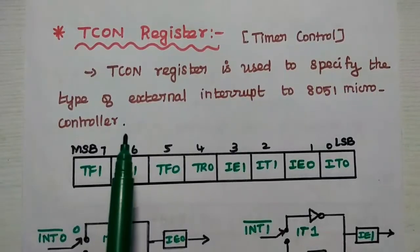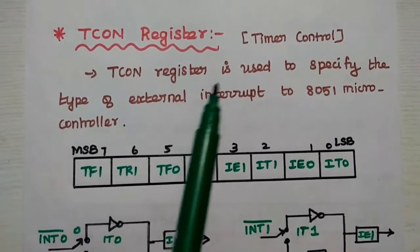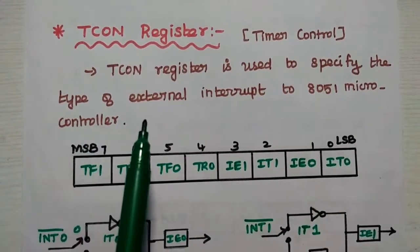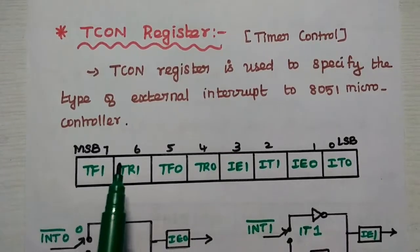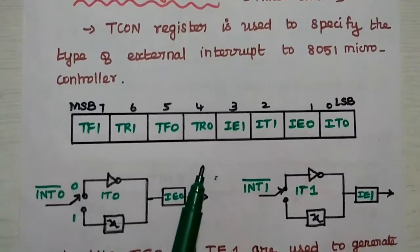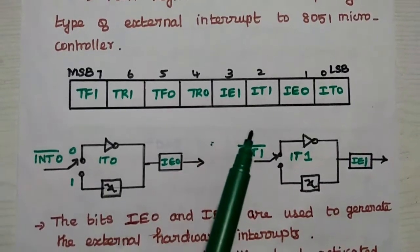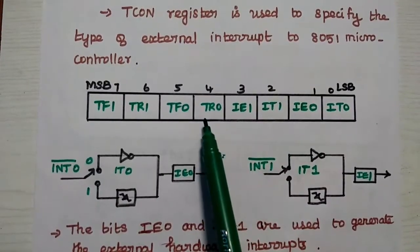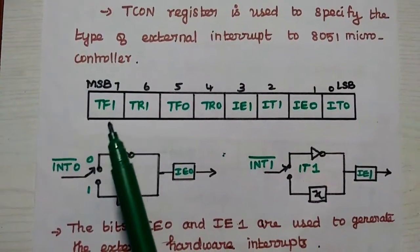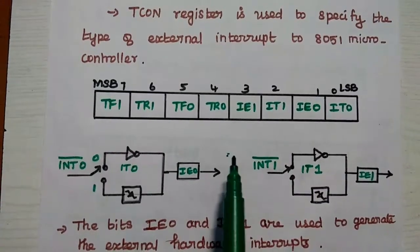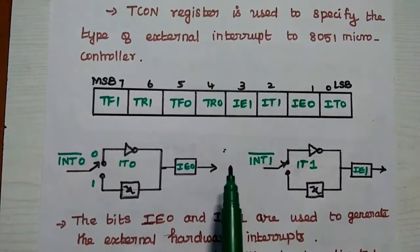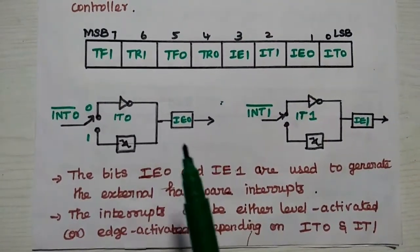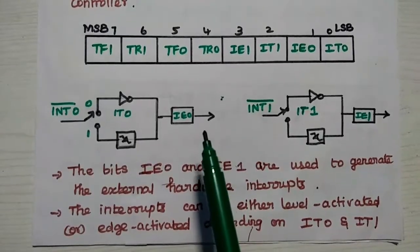The last one is the TCON register, which stands for timer control register. This register is used to specify the type of external interrupt to the AT51 microcontroller. The bit values are: IT0, IE0, IT1, IE1, TR0, TF0, TR1, TF1. This register is used to specify the type of external interrupt, using the IT0 and IE0 as well as IT1 and IE1 bits.